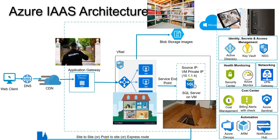Coming back to the various components: if you want more security, you can have continuous monitoring on your house using cameras. Similarly, you have Azure Monitoring on the cloud. If you want a complete security environment — like how apartments have a dedicated security office with 10-12 people — you can have Azure Security Center to continuously monitor threats and vulnerabilities coming to your servers. You can further enhance it with Azure Defender and Azure Sentinel.